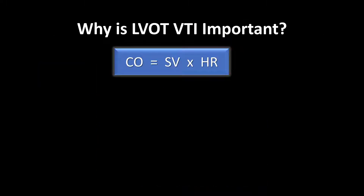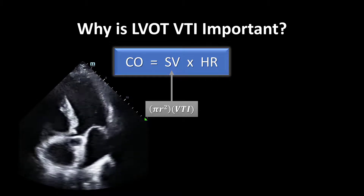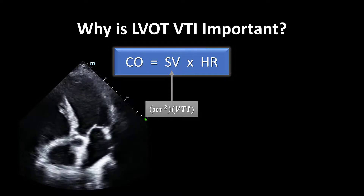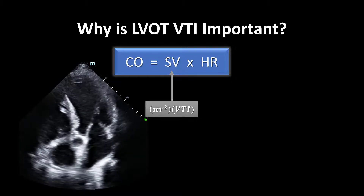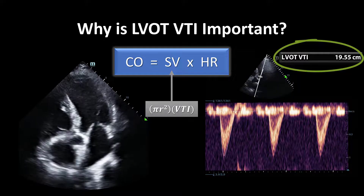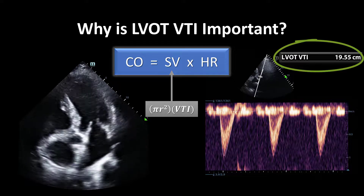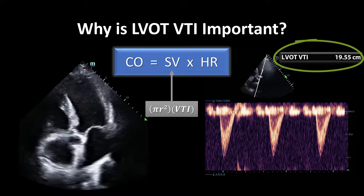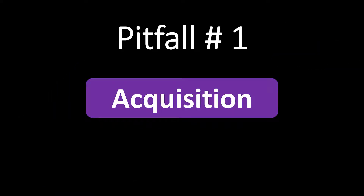So why is the LVOT VTI important? Because it is your surrogate for stroke volume and allows you to calculate a patient's cardiac output, regardless of whether you're in the emergency department, the ICU, or on the wards. By using your VTI as the surrogate for stroke volume and knowing a patient's heart rate, you can make this cardiac output determination at any point in time. Taking it one step further and using LVOT VTI gives you such important information — you can determine that this patient's stroke volume and cardiac output are actually normal at this point in time, which is invaluable hemodynamic information. Now let's dive right into our pitfalls.